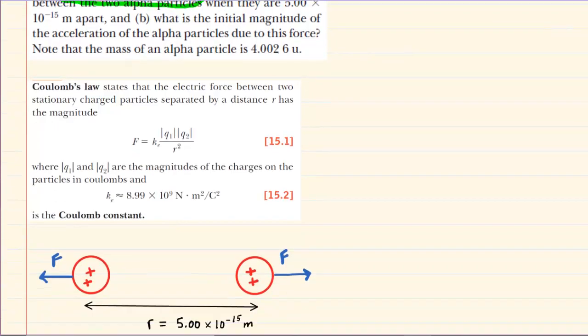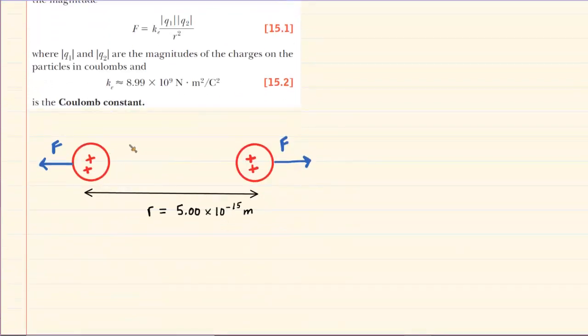We can come down here and draw a picture of the scenario. So here we have the two alpha particles drawn in red. Once again, they consist each of two protons, so we've drawn two positive charges inside of each alpha particle. And because each alpha particle contains two protons, we know that the charge on each one would be positive 2e. We may remember that e symbolizes the elementary charge. In other words, the first alpha particle, we'll call it q1, has a charge of 2e. And the second alpha particle also has a charge of 2e.